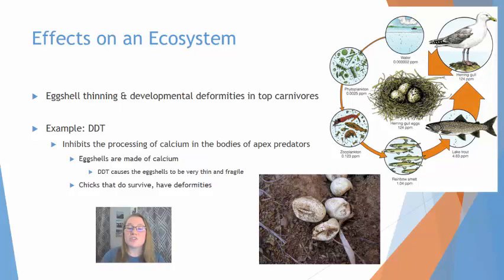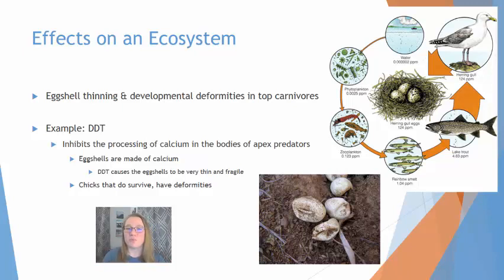Because they're so thin, either when the egg is laid and hits the nest it could shatter, or as the mother bird sits on the nest that could crush the eggs. If for some reason the egg survives and hatches, oftentimes those chicks are going to have some kind of deformity, because calcium is critical to early development — particularly in making the bones and beaks of these organisms.